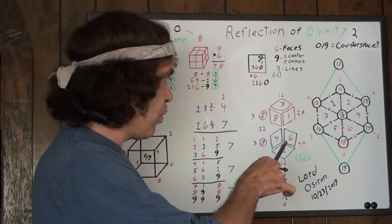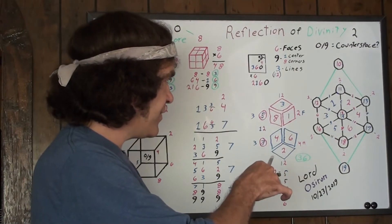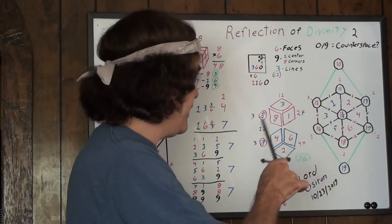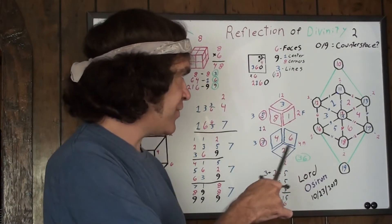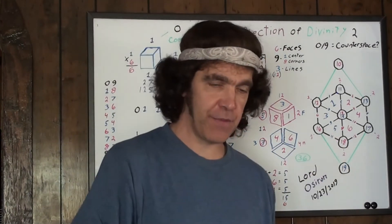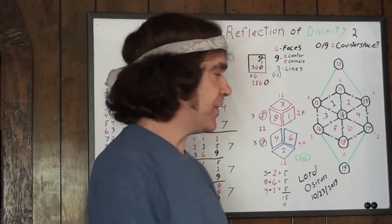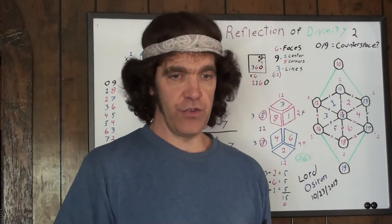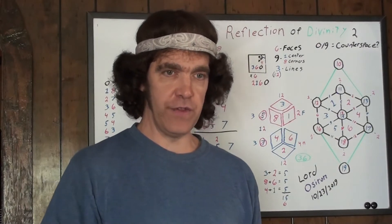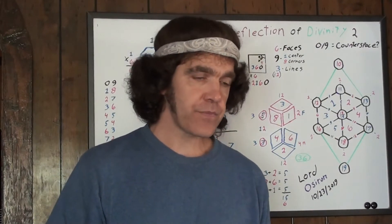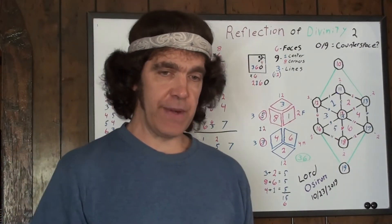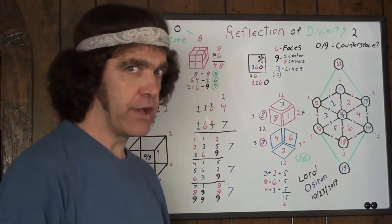The cube itself is made of 22 segments. You've got the six faces, the 12 lines, and the three aspects of height, width, and depth. The only thing missing in this case would be the center point in the middle — but when you leave out that center point, that is 21, and that reduces to a three. So all of this is coming back to three quite a bit.